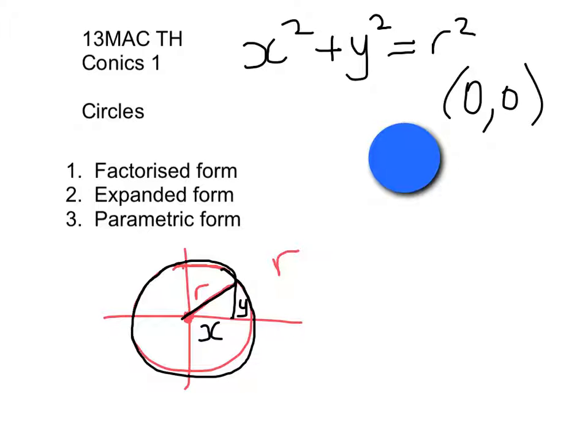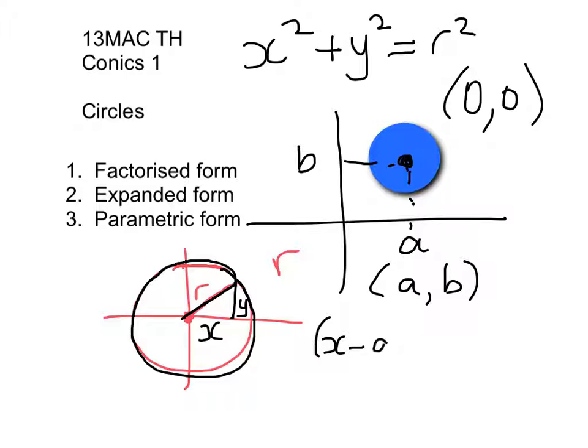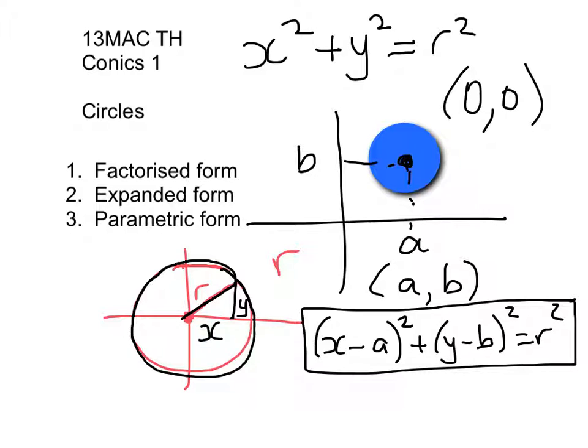But we are much more interested in circles that can be absolutely anywhere in the Cartesian plane. So let's look at this lovely blue circle that's already here. It's been moved away from having the origin as its centre, and its new centre is at a and b. So everything we learnt in Level 2 graphing works here as well, and we can write the equation of this circle as x minus a squared plus y minus b squared equals r squared. Now this is a really nice way to see the centre and the radius of a circle easily. So that is factorised form.